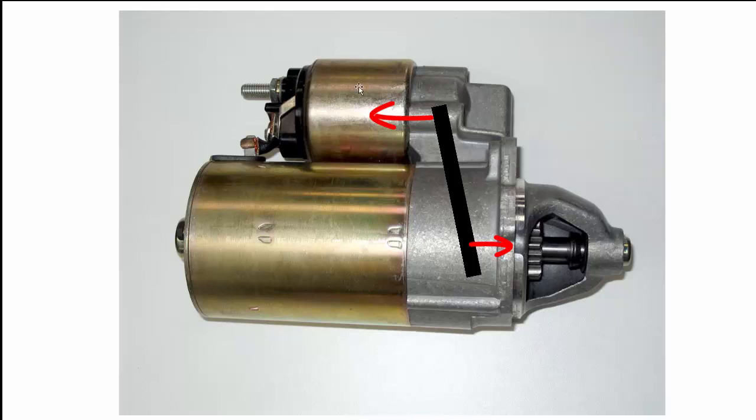And then when we release the key, we're also releasing the power to the solenoid, which will allow that fork to go back to its normal position and the gear will no longer be in contact with the flywheel anymore because the starter is no longer needed.